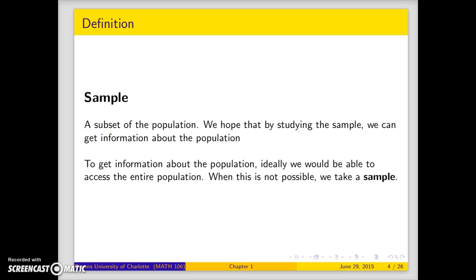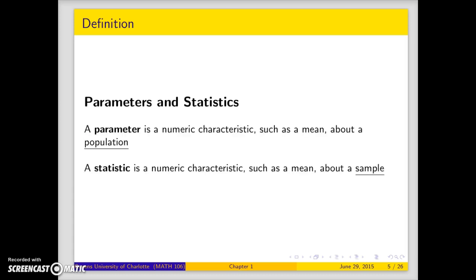So that actually brings us to parameters and statistics. A parameter is a numeric characteristic, such as a mean, about a population. So it's the population mean. Whereas a statistic is similar, but it is about a sample. It's about a sample. I'm just emphasizing this.